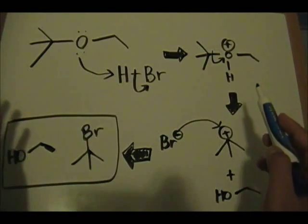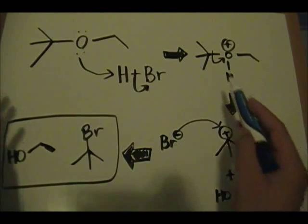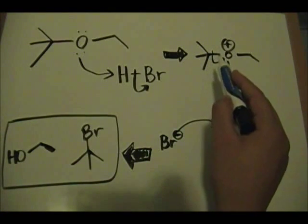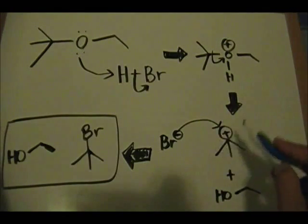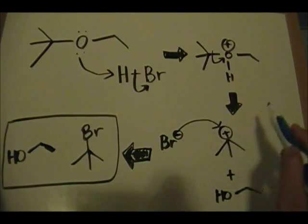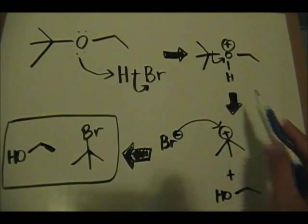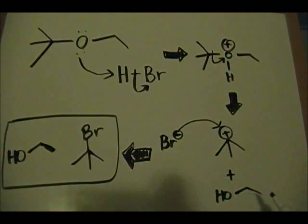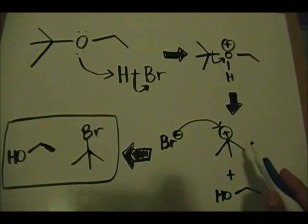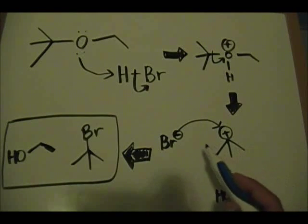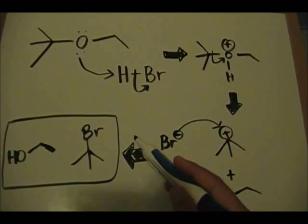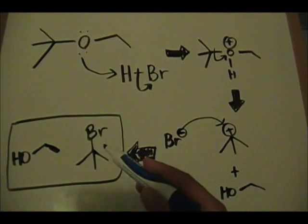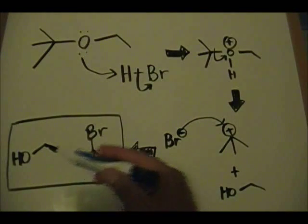Now you want to form the most substituted carbocation intermediate. So you kick off this pair of electrons onto the oxygen. That's how you form this carbocation intermediate. And as a byproduct of this step you form the alcohol. Now the final step in the reaction mechanism is that the bromine forms a bond with the carbon bearing the positive charge. And that is how you form your tertiary alkyl halide and your primary alcohol.